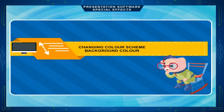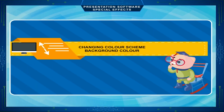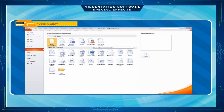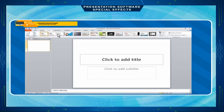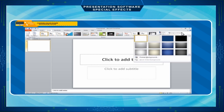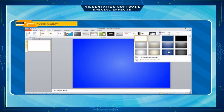Changing the color scheme and background color. Theme colors contain four text and background colors. On the Design tab in the Themes group, choose a background which you want to apply to your slide and click on it. Click Colors to choose different colors if you want to change the selected background color.